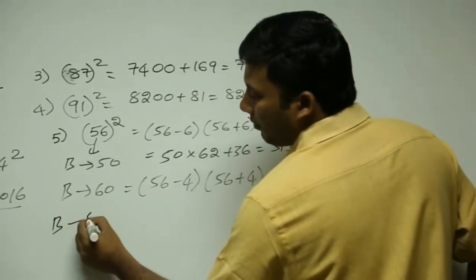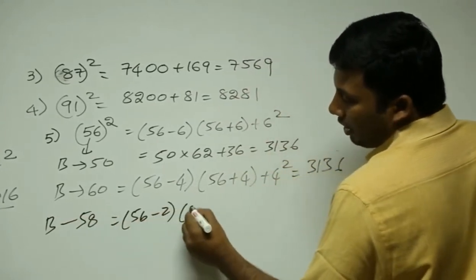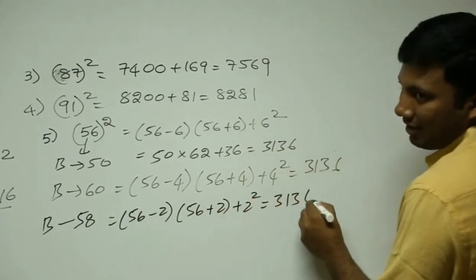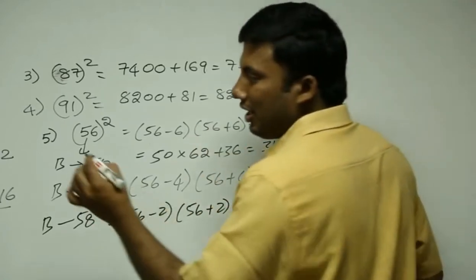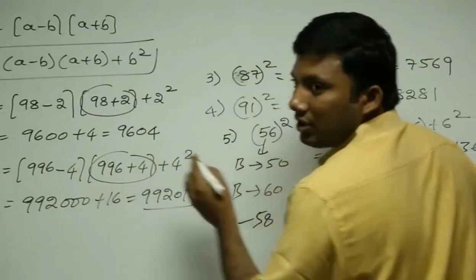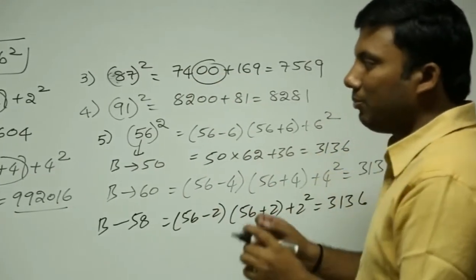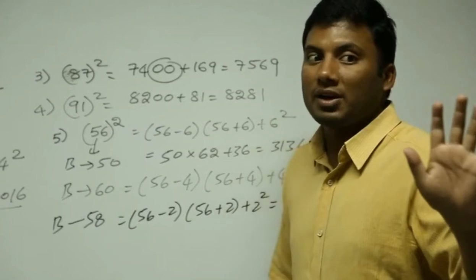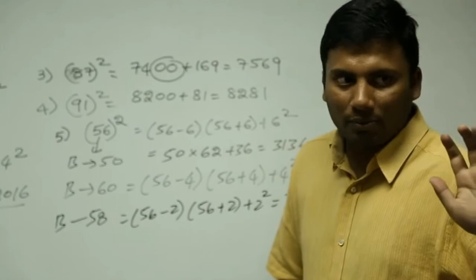You could even take base 58: (56 - 2)(56 + 2) + 2² — this also gives 3136. So why do we prefer a base that is a power of 10 or multiple of 10? Because when multiplying by such a base, you are only adding zeros — no complex multiplication needed. We take the base as a power of 10 or multiple of 10 to reduce time and space complexity in solving a problem.